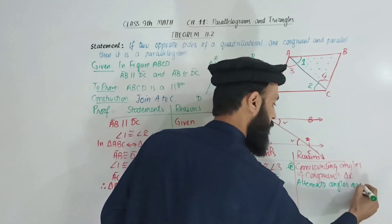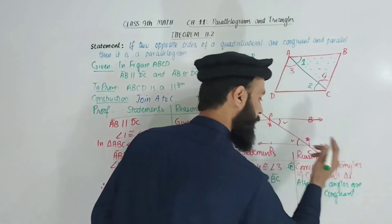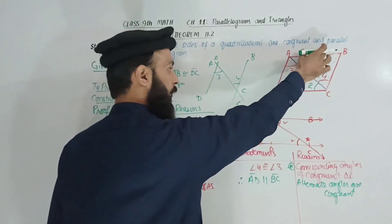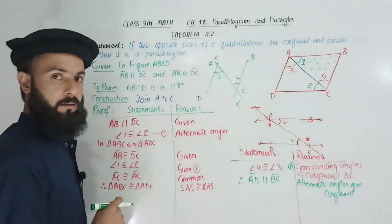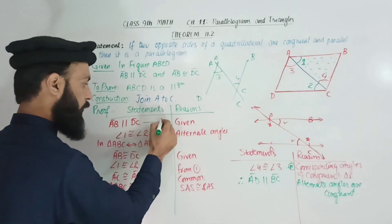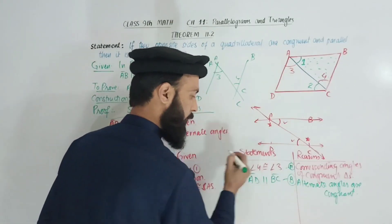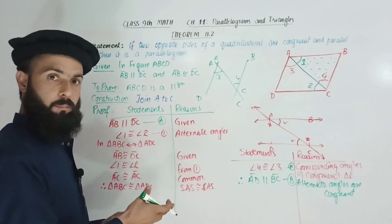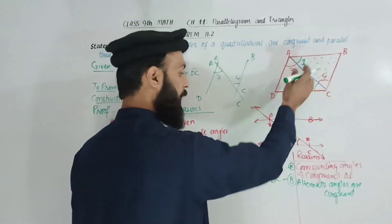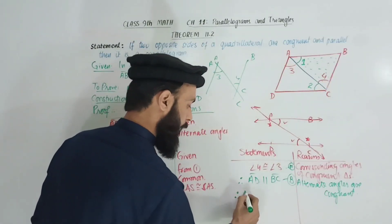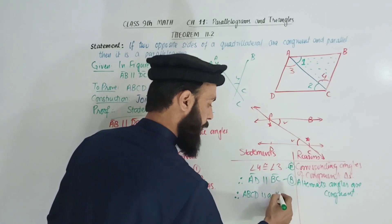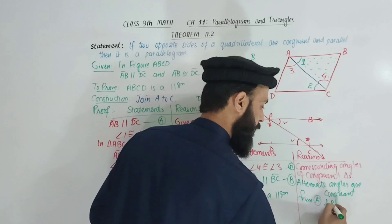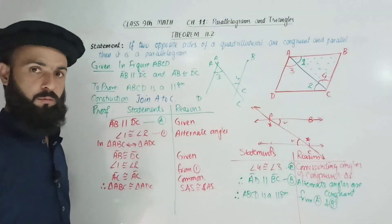Alternate angles are congruent, therefore AD is parallel to BC. And we already have AB is parallel to DC — this is given. So both pairs of opposite sides are parallel. Therefore, the quadrilateral ABCD has both pairs of opposite sides parallel, which means ABCD is a parallelogram.